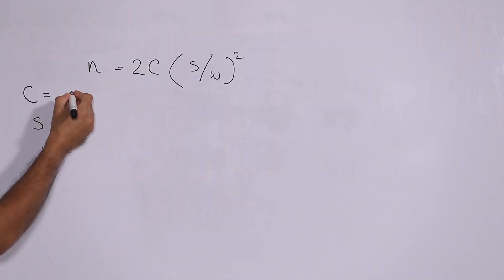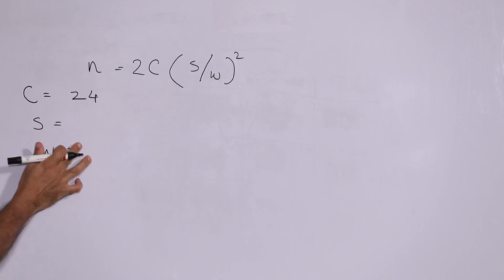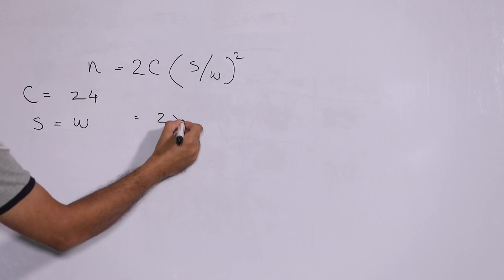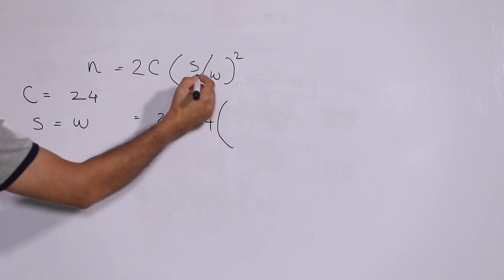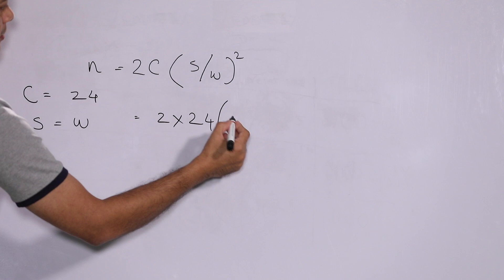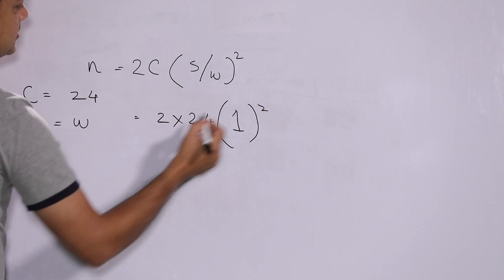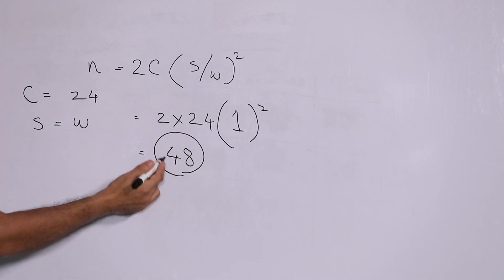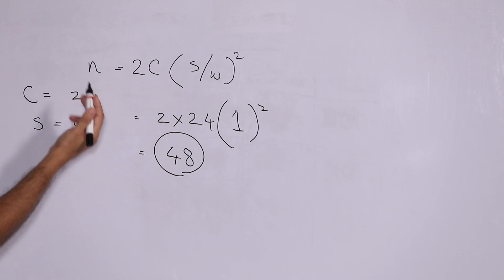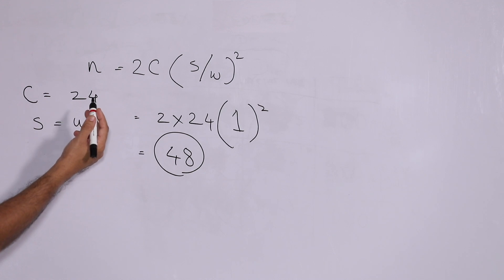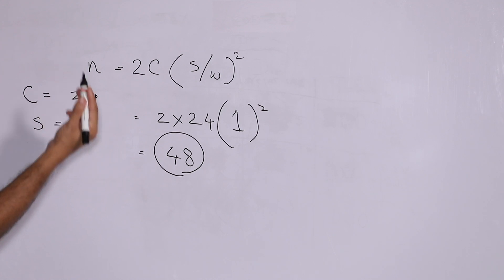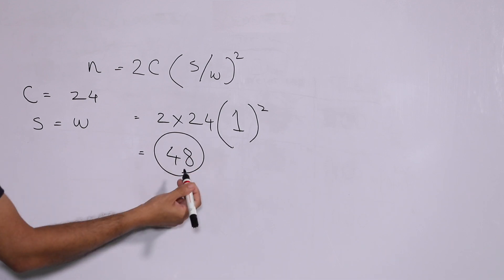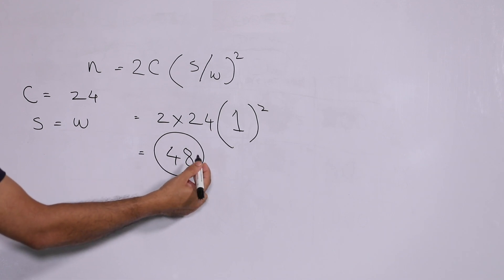In this problem, the power is 99% and alpha is 0.01. Using the same equation n = 2c(s/w)², from the lookup table c = 24 for these parameters. Since s = w, the ratio s/w = 1. So n = 2 × 24 × (1)² = 48. The required sample size is 48 per group. That means each group should have 48, so the total sample is 48 + 48 = 96.